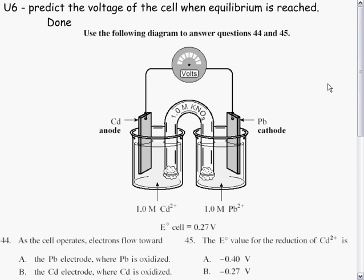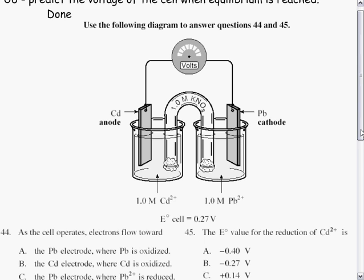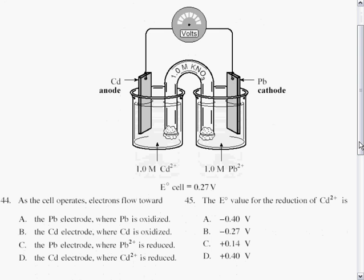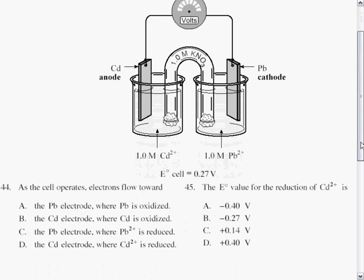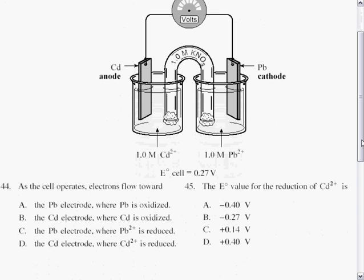Review 6. Predict the voltage of the cell when equilibrium is reached. This is a review for May 24th. Use the following diagram to answer the next two questions. We have the following diagram with a cadmium anode and a lead cathode. The two questions are as written.